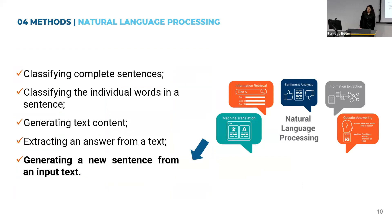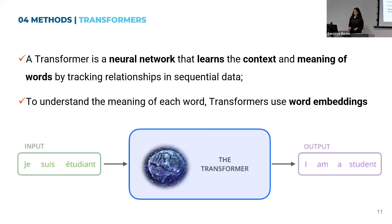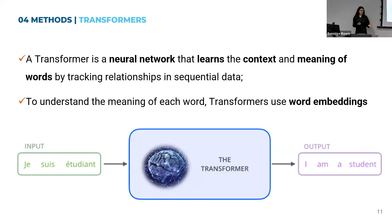Before moving on, I want to share some basic concepts, starting with natural language processing, NLP, whose goal is to mimic language processing similar to humans. It's used for various tasks such as generating text or generating a new sentence from an input text, for example when summarizing or translating. To solve these tasks, the most common neural network used is transformers, which learns the context and meanings of words using word embeddings — numerical vectors that represent the semantic meaning of a word.